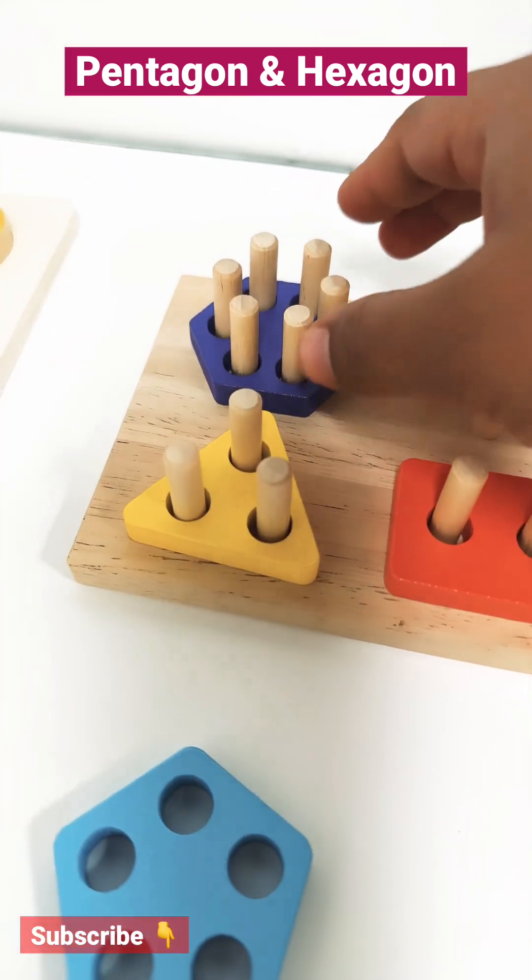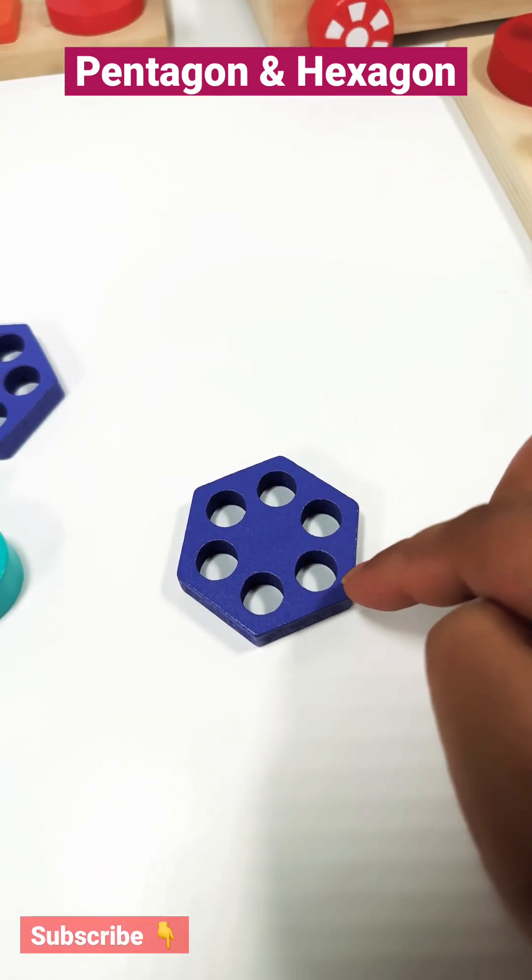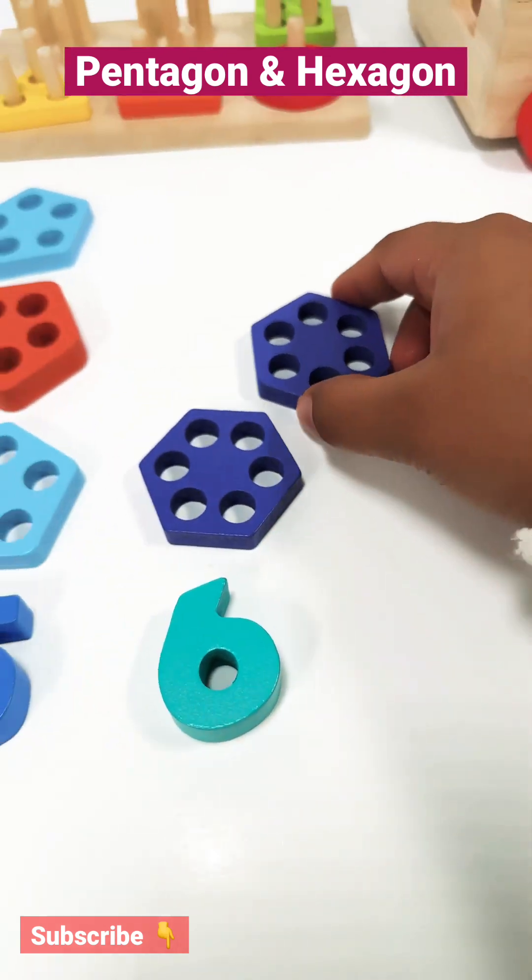And this one also looks like a similar shape. Let's count the number of sides. One, two, three, four, five, six. So a hexagon.